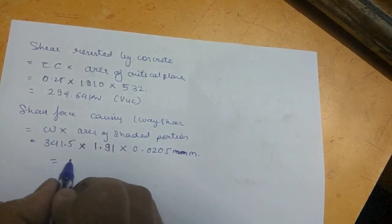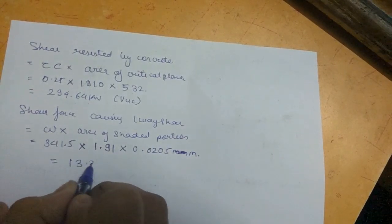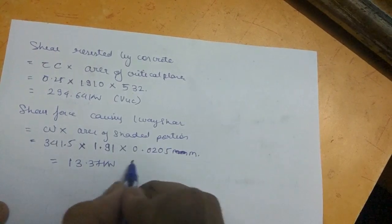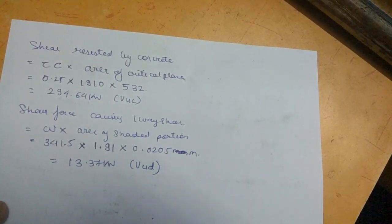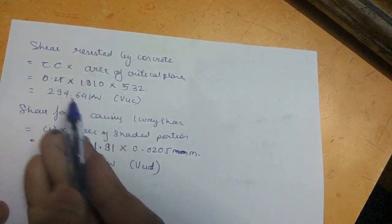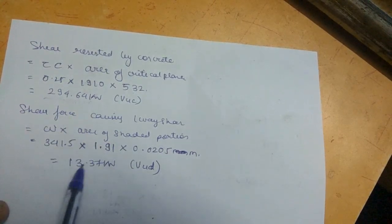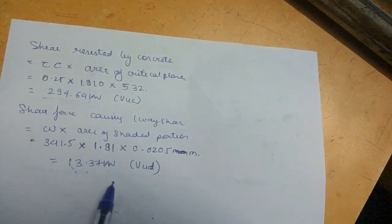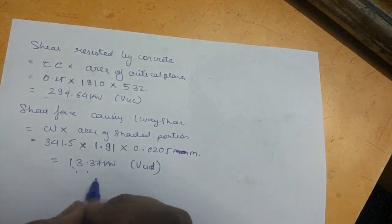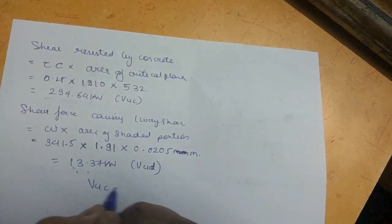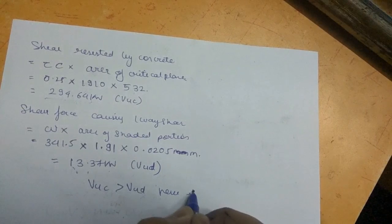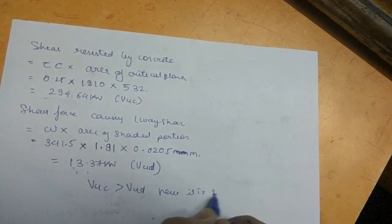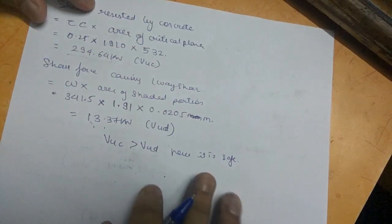VUC (294 kN) is greater than VUD (13.37 kN), hence the footing is safe in one-way shear in the Y direction.